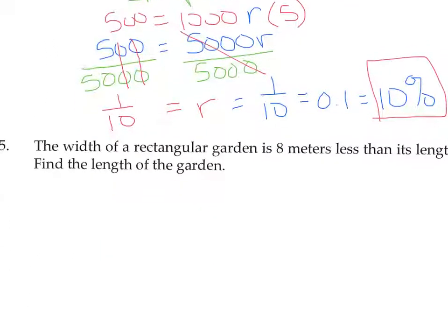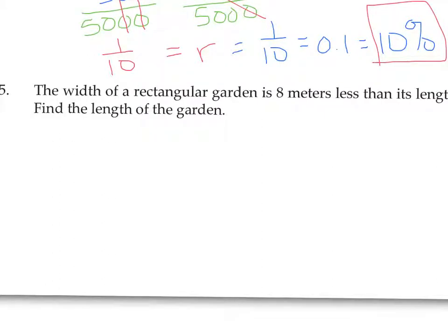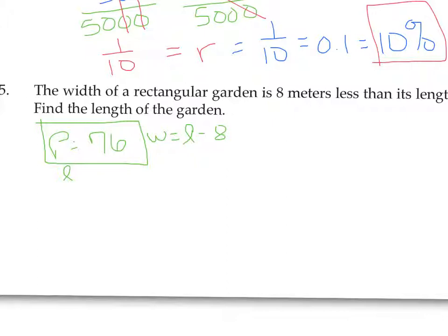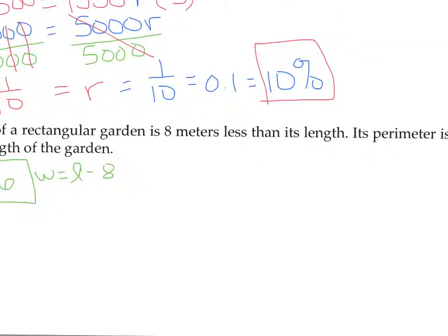Number 5 is a rectangle. The width of a rectangular garden is 8 meters less than its length, and its perimeter is 76 meters. Find the length of the garden. I'm going to start with a picture, especially with geometry questions. The width is 8 meters less than the length, so width equals length minus 8. The perimeter is 76 meters, so we start with the formula: perimeter of a rectangle is 2 times length plus 2 times width.